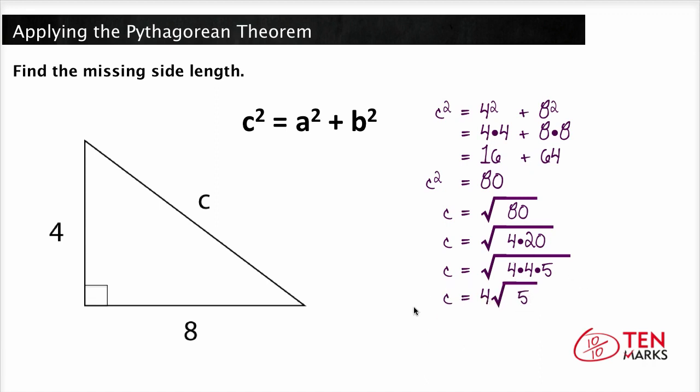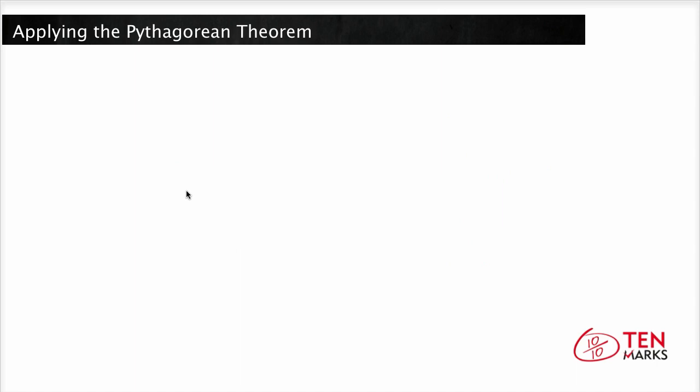The hypotenuse then of this large triangle here is 4 root 5. Now let's try another problem.